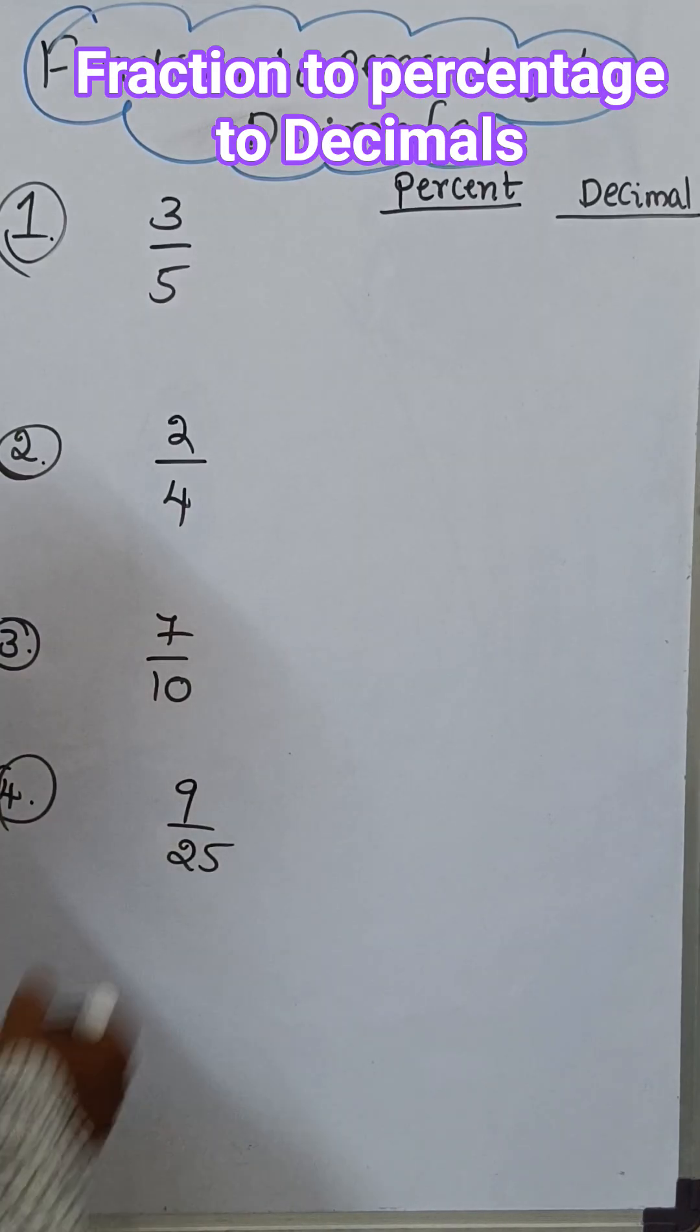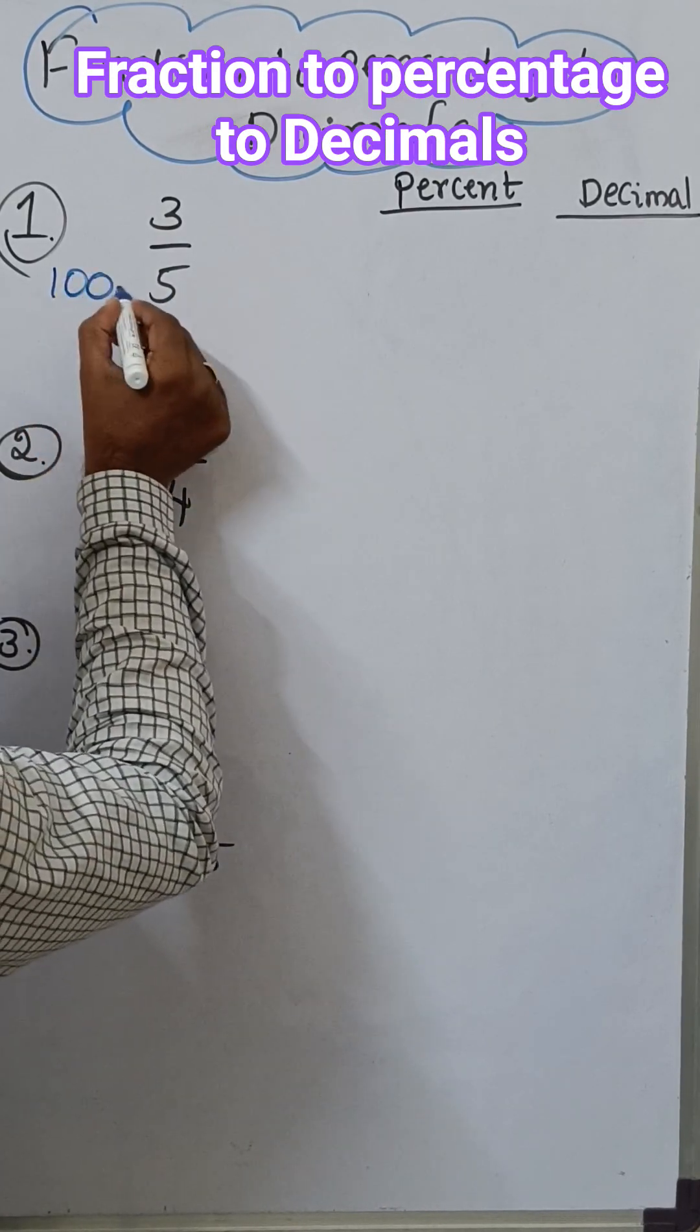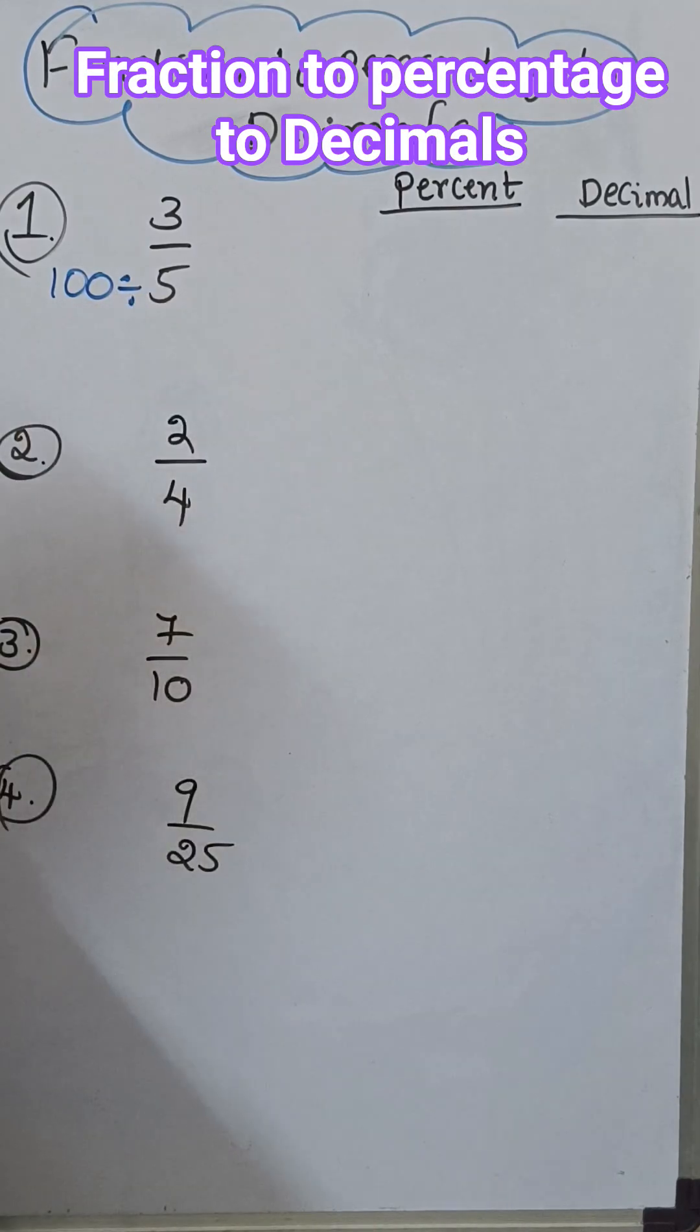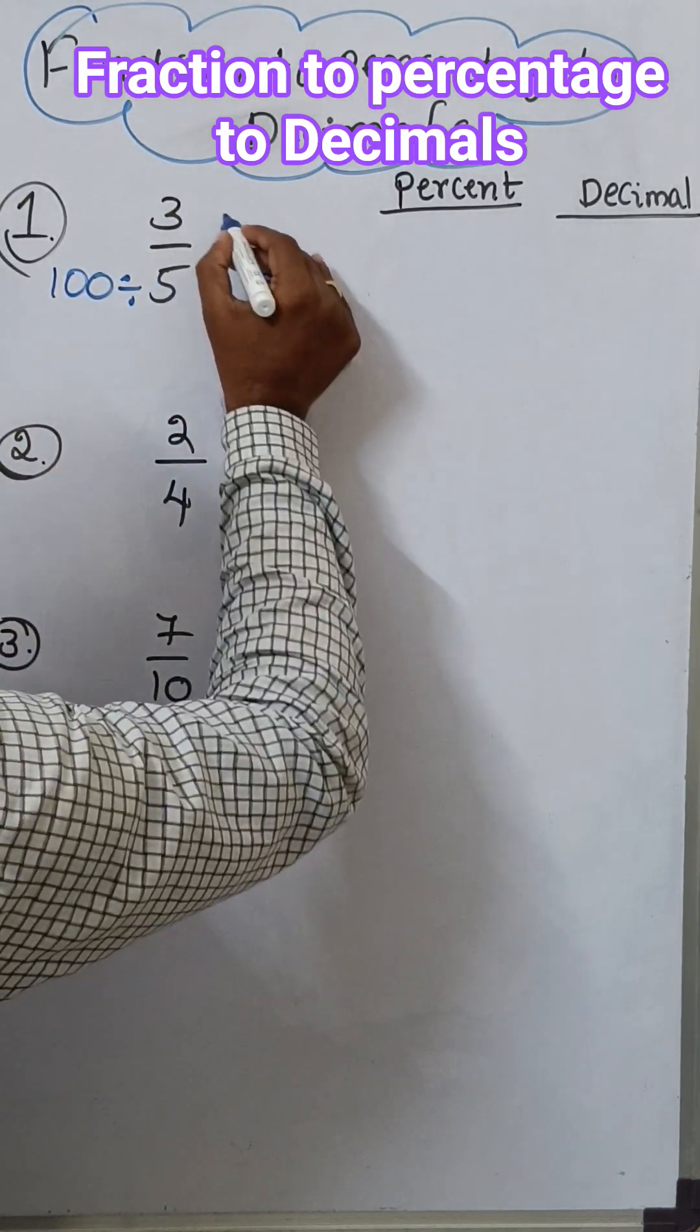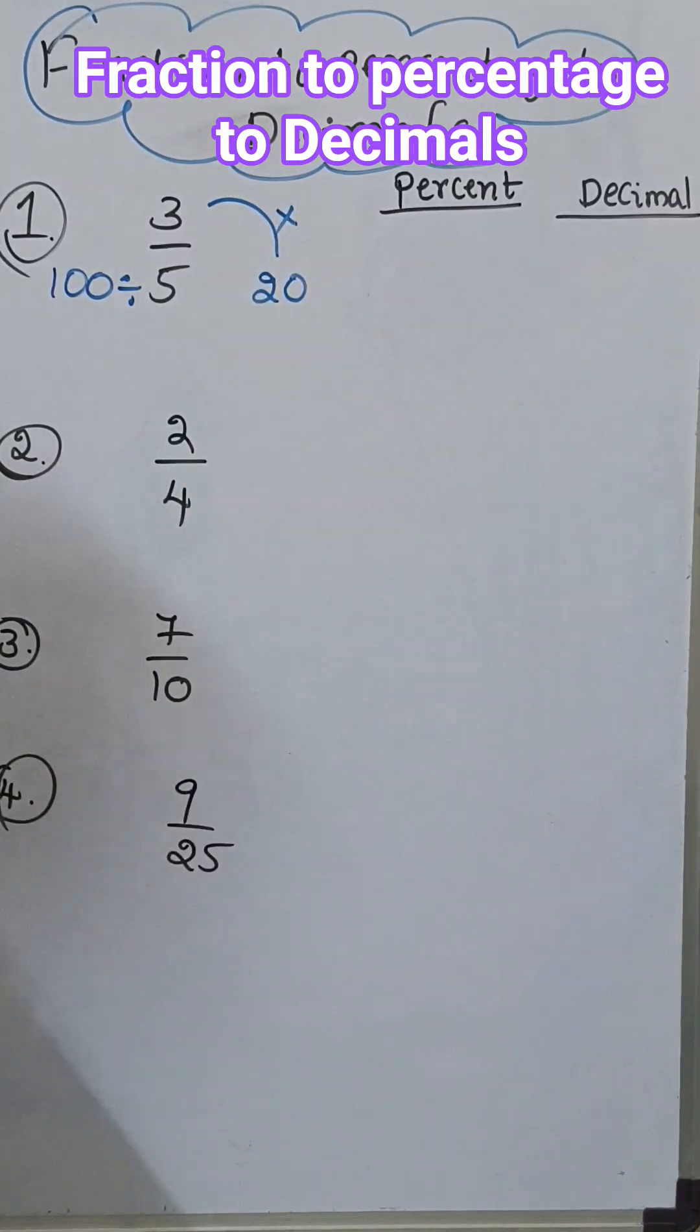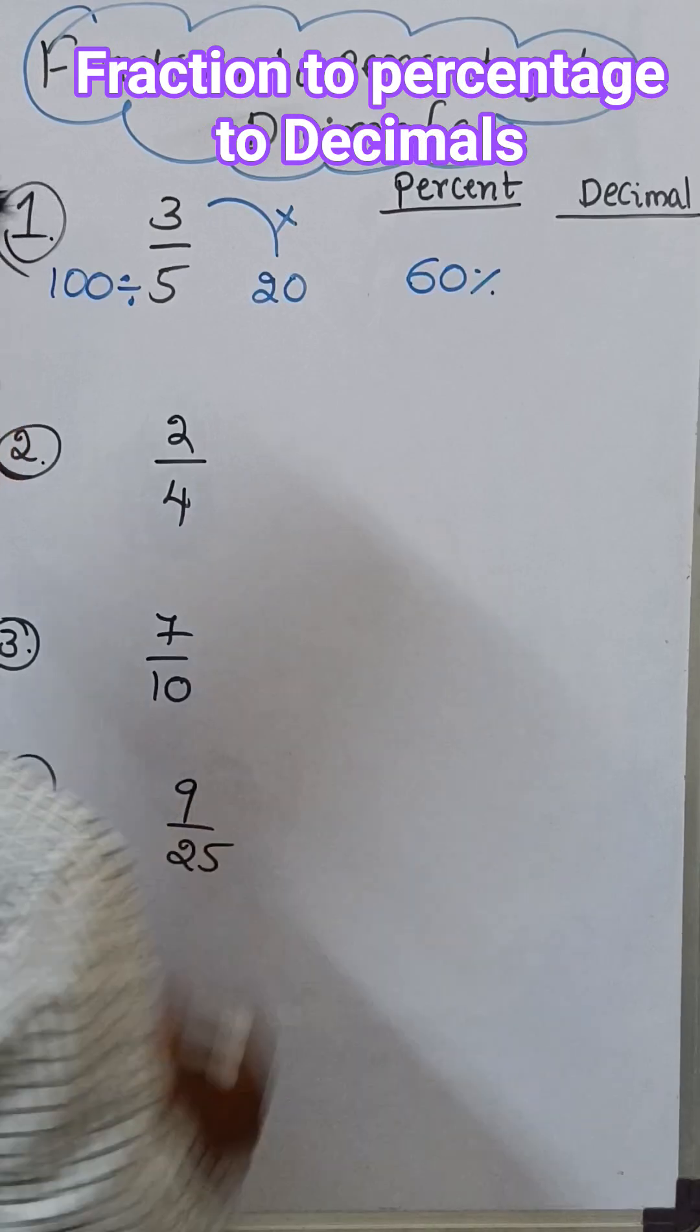See 3 by 5. So denominator, I have to take denominator 100 divided by 5. How much? 5 times 20 is 100. So multiply numerator with numerator. This is 60, that is 60 percentage. 3 by 5 is 60 percent.